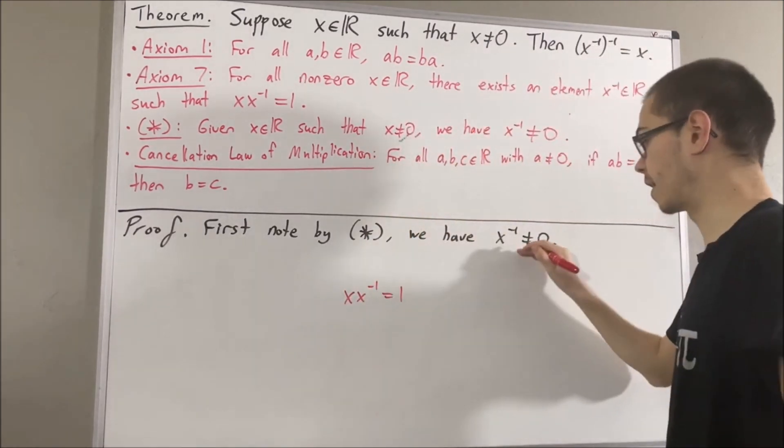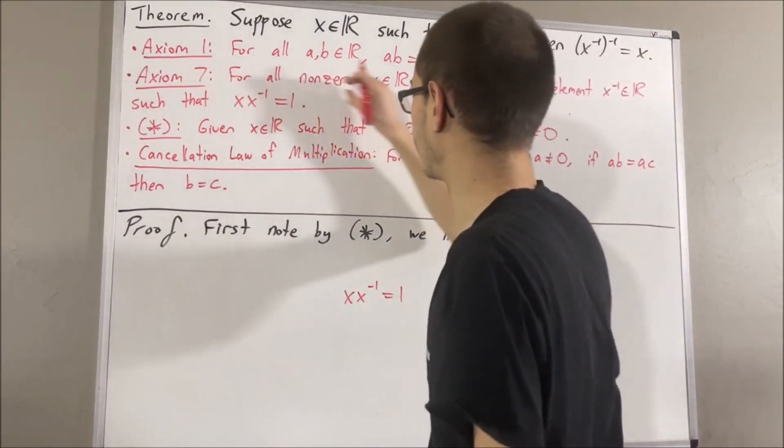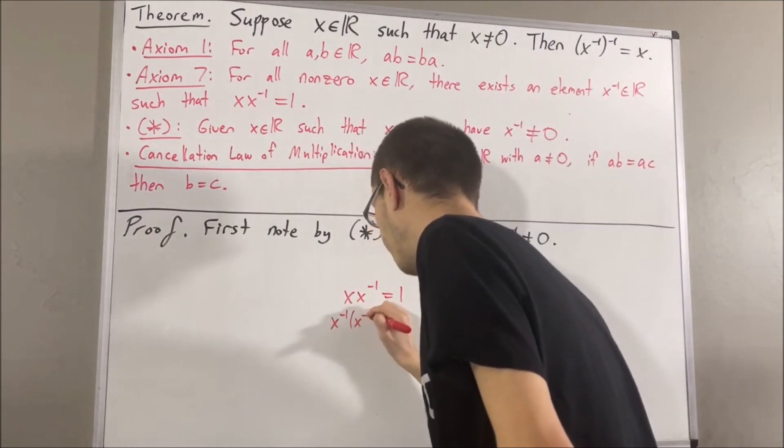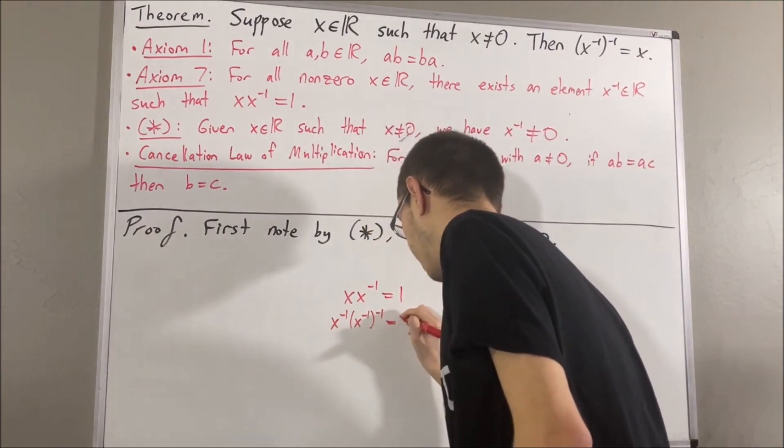But since the reciprocal of x is not equal to 0, we can also apply axiom 7 to the reciprocal of x. And we have that the reciprocal of x times the reciprocal of the reciprocal of x is equal to 1.